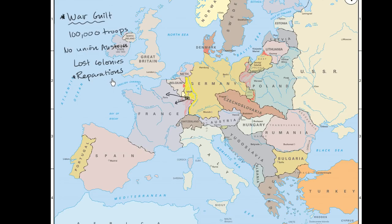Once this hyperinflation happened and Germany could no longer pay the reparations, France went ahead and occupied the Ruhr region in 1923 to continue extracting resources. The Ruhr was also very rich in steel and coal, and they began shipping those resources out — which was another huge humiliation for the Germans and was crippling the German economy.